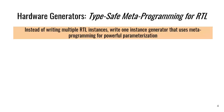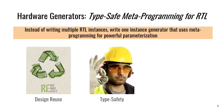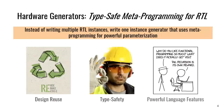Another way to think about it is type-safe metaprogramming for RTL. The idea was that instead of writing multiple RTL instances that all look similar, you write one generator that is parameterized, and you can generate multiple instances from that one generator. If you do this, you get a lot more design reuse because you express something once but it can generate multiple different instances. You get type-safety because you wrote your generator in a more powerful programming language, and you get all modern programming language features.